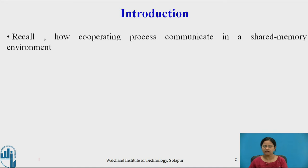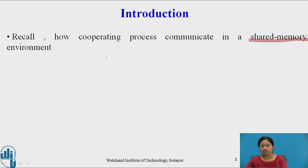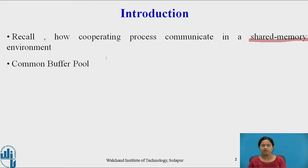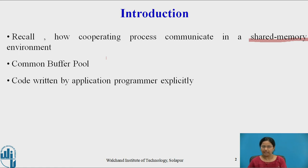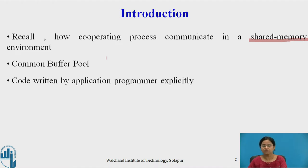Recall from the last video that we already studied the cooperating process concept. So how do cooperating processes communicate in a shared memory environment? Cooperating processes can communicate using a common buffer pool when implementing shared memory. This common buffer pool is implemented by the application programmer explicitly. As we studied in the producer-consumer problem, which is a very good example of a shared memory environment, producer and consumer communicate using a common buffer pool implemented by the application programmer.